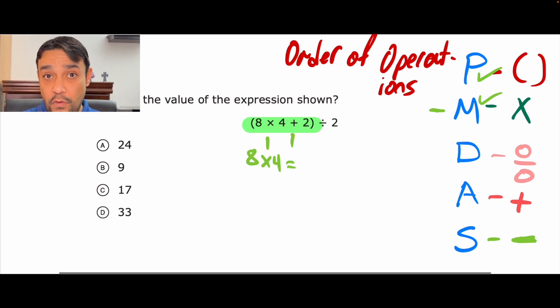So, 8 times 4, well, that's 32. So far, so good. Okay. Our very next thing says to add. Because remember, we're still inside the parentheses. So, now, we're going to add.